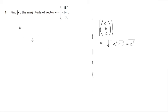So in this case, the magnitude of v, that's the magnitude of the vector with components 18, negative 14, and 3, will be the square root of, and let's work through these components.